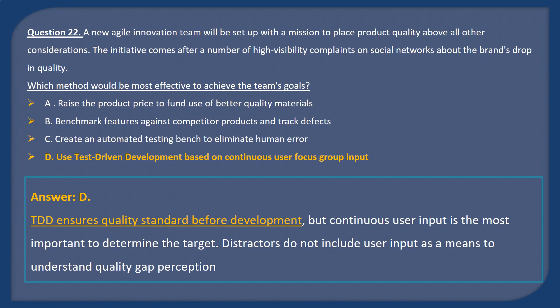Answer D. TDD ensures quality standards before development, but continuous user input is the most important factor to determine the target. Distractors do not include user input as a means to understand the quality gap perception.